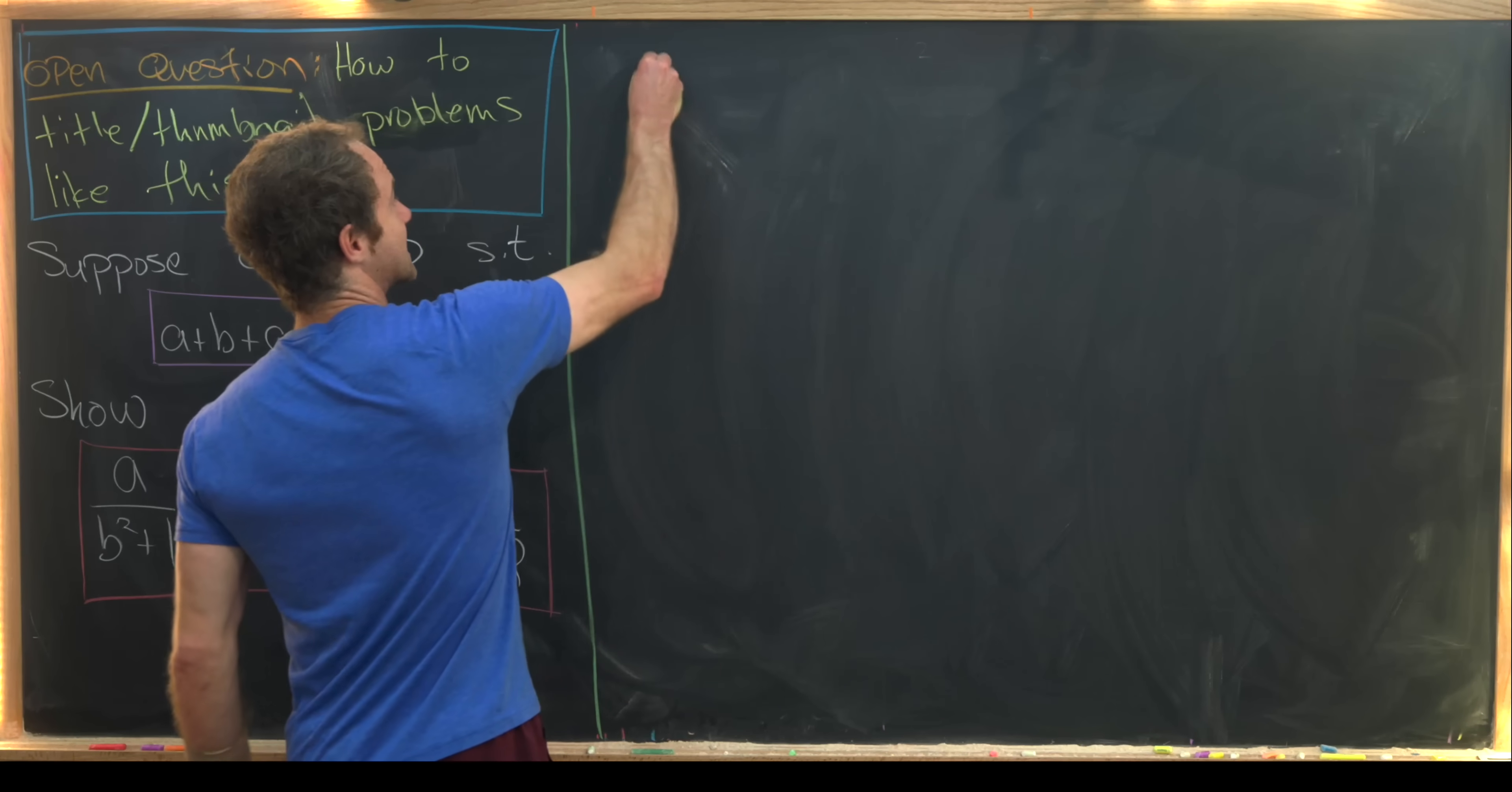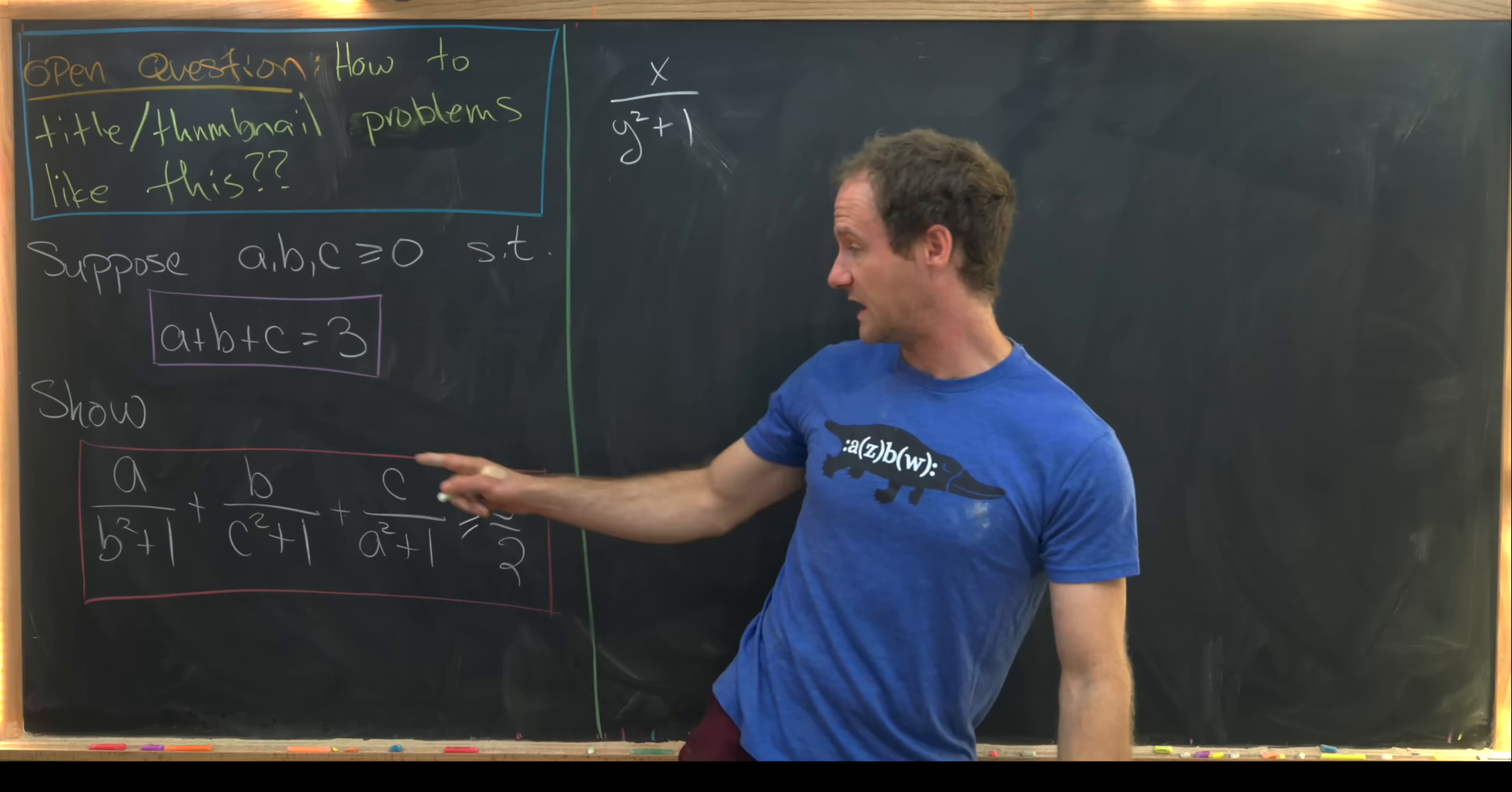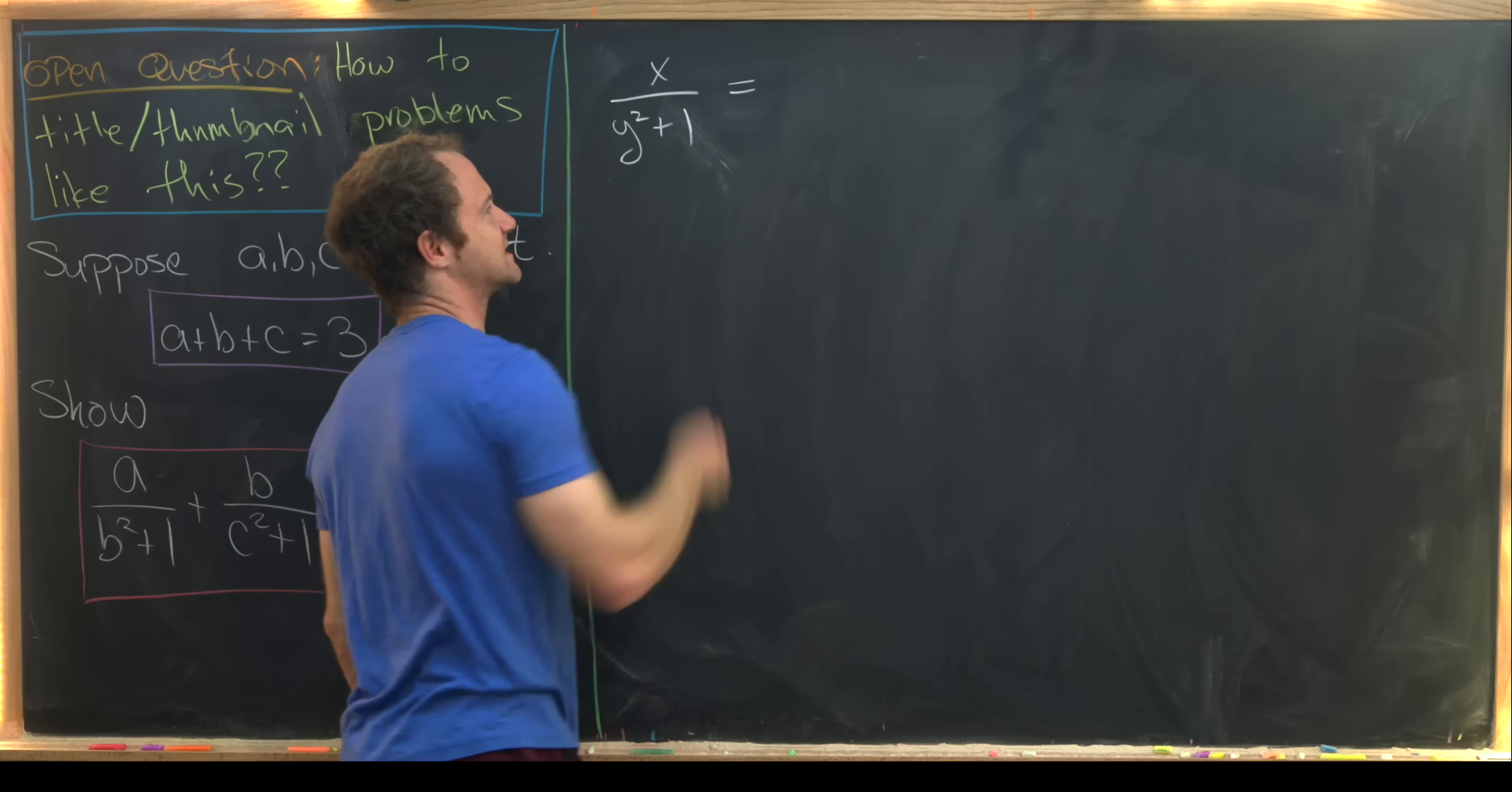So let's first notice that we can take x over y squared plus 1. Notice that could play the role of any of these, and then we can write it in this complicated format.